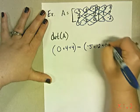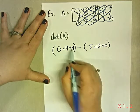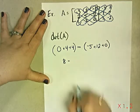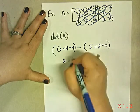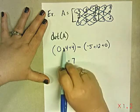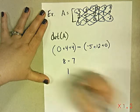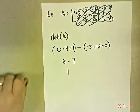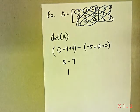There's my magic 0. Woo-hoo. All right. 4 plus 4 is 8. Negative 5 plus 12 is 7. So 8 minus 7 is positive 1. The determinant of this matrix is positive 1.